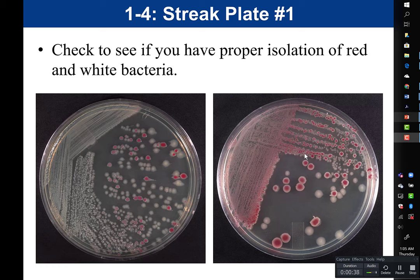Looking at one of the plates more critically: the streaks got close together, and the streaks also look a little bit broad. That means the loop angle was likely a little too flat — a flat loop angle gives broad streaks. You want your streaks to be much thinner. One plate here has thinner streaks, while the other has more of the broad streaks. But both would still be considered successful streak plates because isolation was achieved.